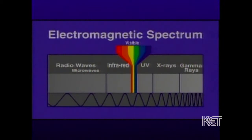Starting with a very long wavelength and low frequency, that's what we would use to transmit power and telephone signals. Going to a shorter wavelength and slightly higher frequency, we get into the range of radio waves. Coming down a little bit more to an even shorter wavelength and higher frequency, we get into the microwave range.